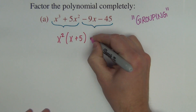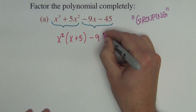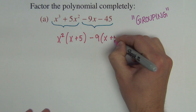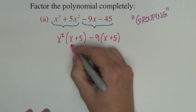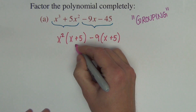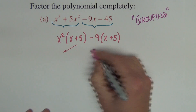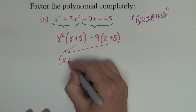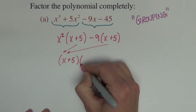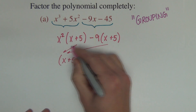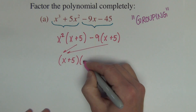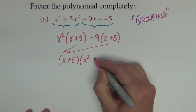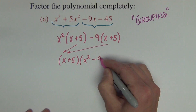In the next two terms, there is a negative 9 common, and it leaves behind x plus 5. The x plus 5 is common, so we pull it out — x plus 5 — and that leaves behind x squared out of the first term, and minus 9 out of the second term.